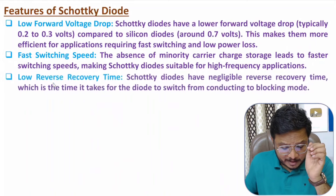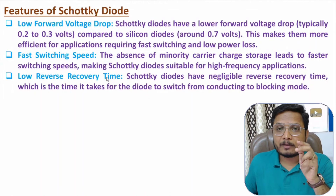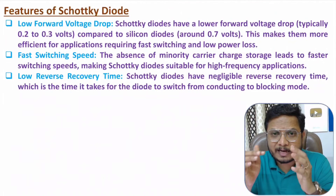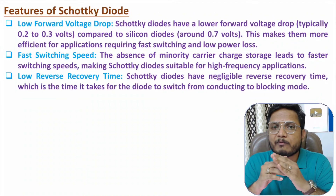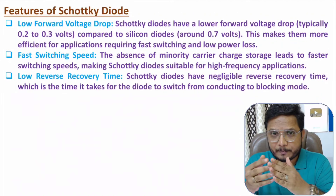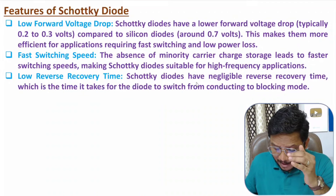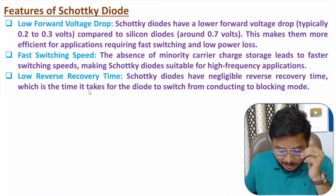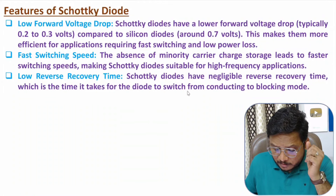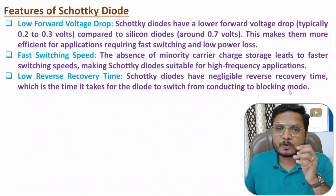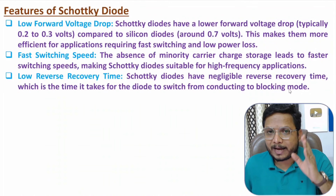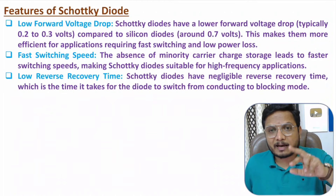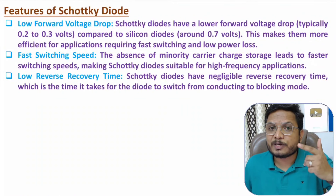Another key feature is low reverse recovery time. The reverse recovery time with the Schottky diode is very small — one should know that switching speed is defined based on reverse recovery time. The Schottky diode has negligible reverse recovery time, which is the time taken for the diode to switch from conducting to blocking mode (on to off), resulting in faster switching.